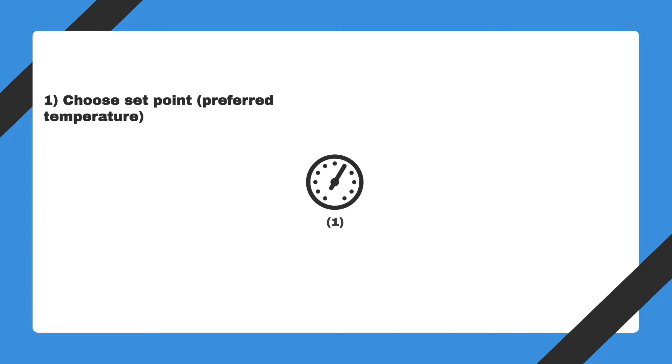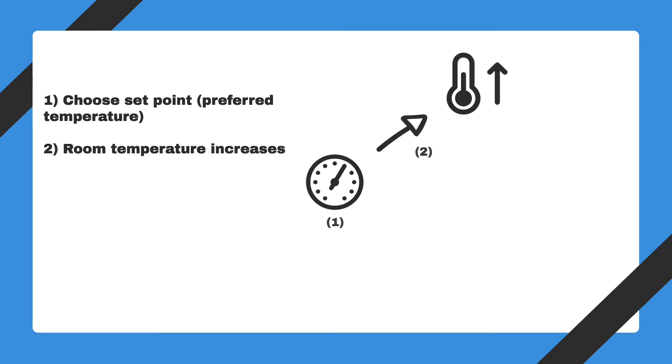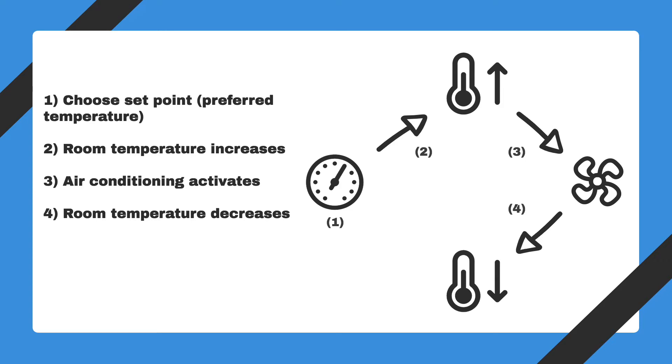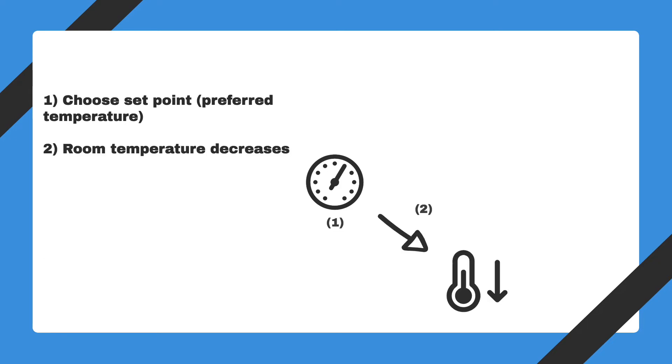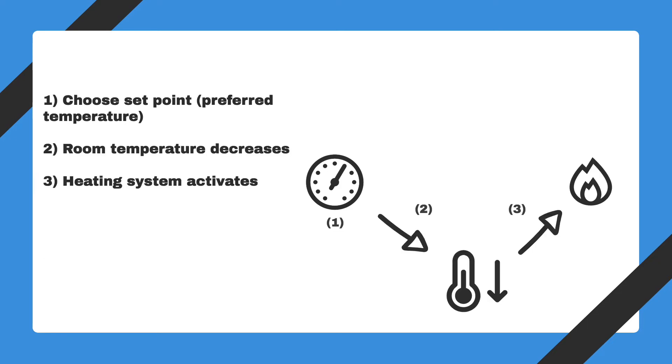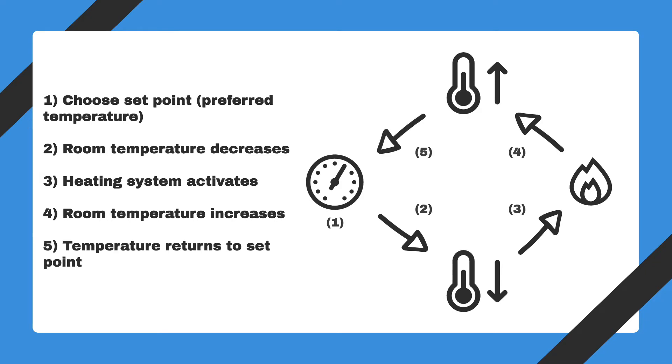This process of temperature control is just like the heating and air conditioning systems in a house. You start by setting your preferred room temperature with your thermostat. If the temperature increases beyond your preferred temperature, the air conditioner senses this and turns on, cooling the air until the room is back to your preferred temperature. And if the temperature decreases, the heating system senses this and turns on until the room is back up to your preferred temperature. This is exactly how the hypothalamus works — it's our body's thermostat.